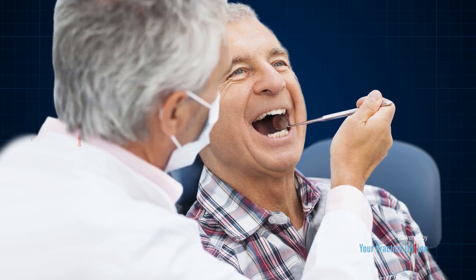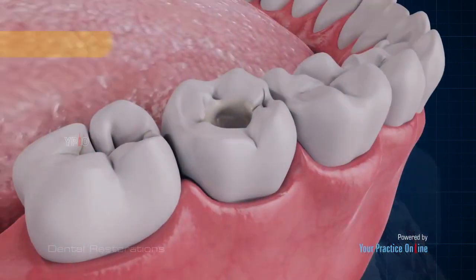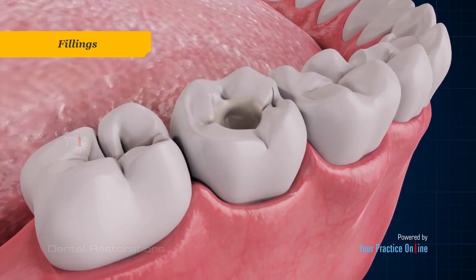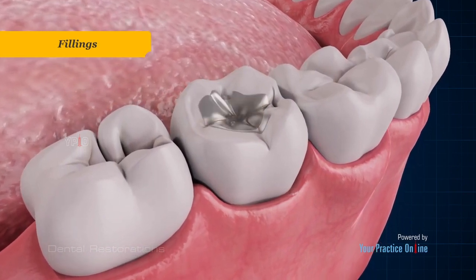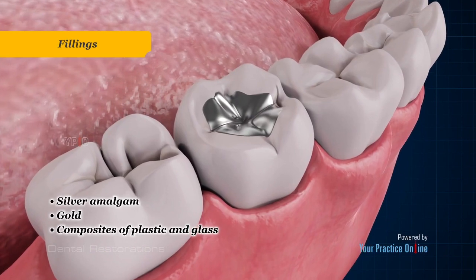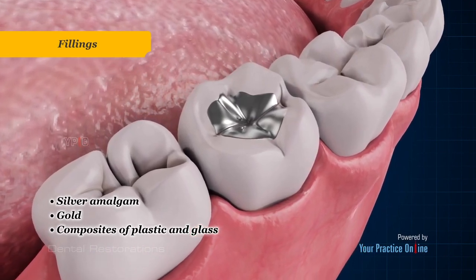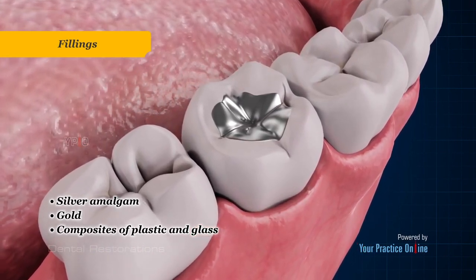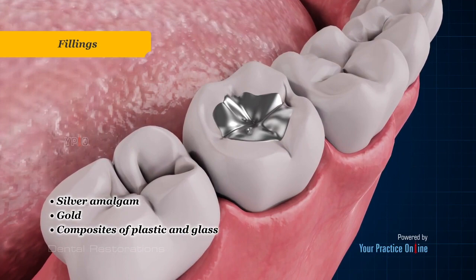Your dentist will perform a careful evaluation to determine the type of restoration to best meet your needs. Fillings are used to replace part of the tooth structure. They can be made of silver amalgam, gold, and composites of plastic and glass that replicate the tooth color and appearance.